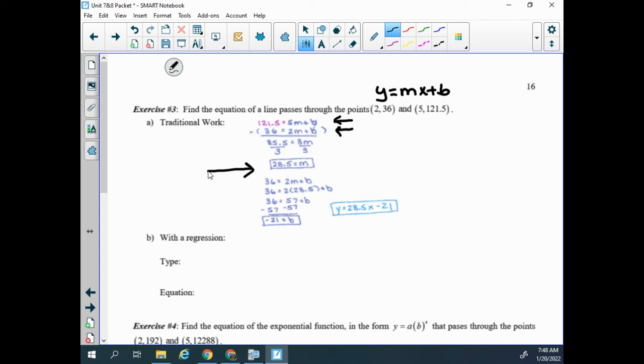When we want to use regression, first off, we notice this is a line. So when we pick a type of regression, we'll pick linear. I'm going to put those points in a table, and then I'm going to put these in my stat menu and choose linear regression.